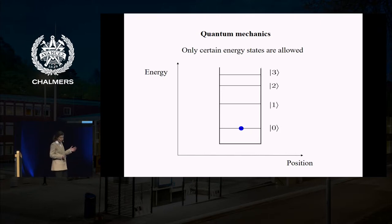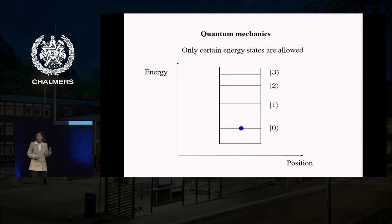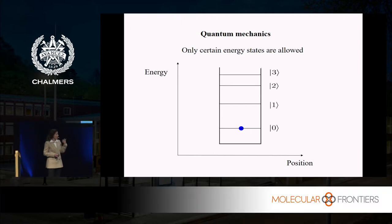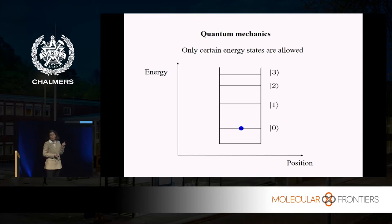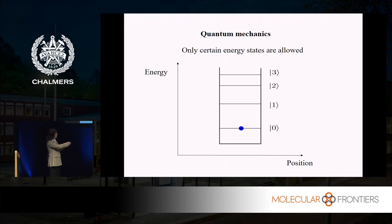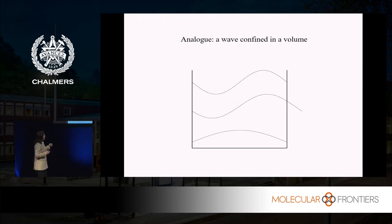In quantum mechanics, things can have only discrete energies. For instance, an electron that is bound to a nucleus by Coulomb forces can have only discrete energies. You can think of the Coulomb force as forming some kind of box in space, and then you have different energies — they are discrete. And why is it so?